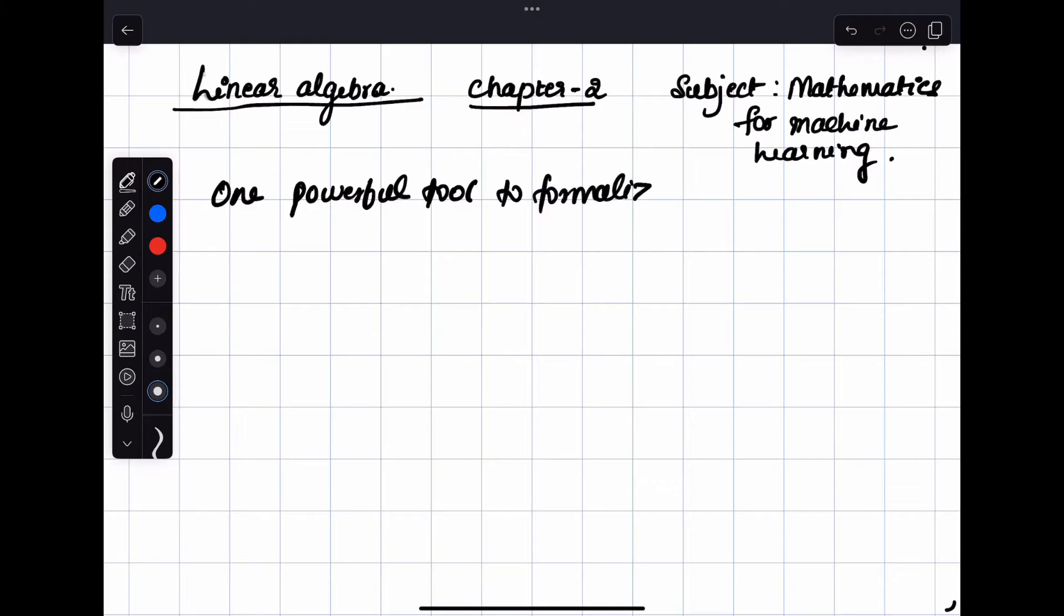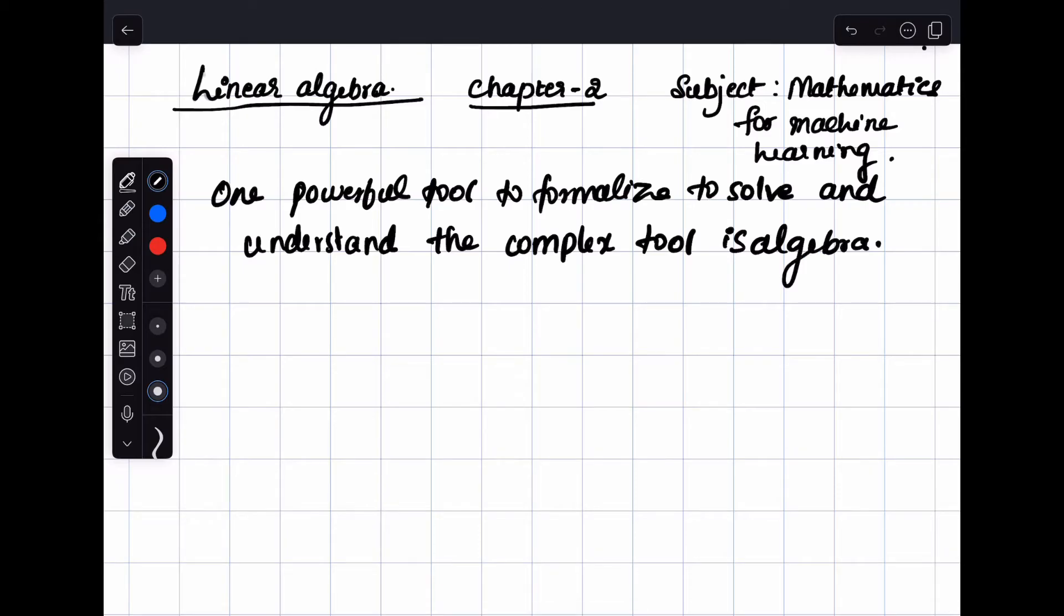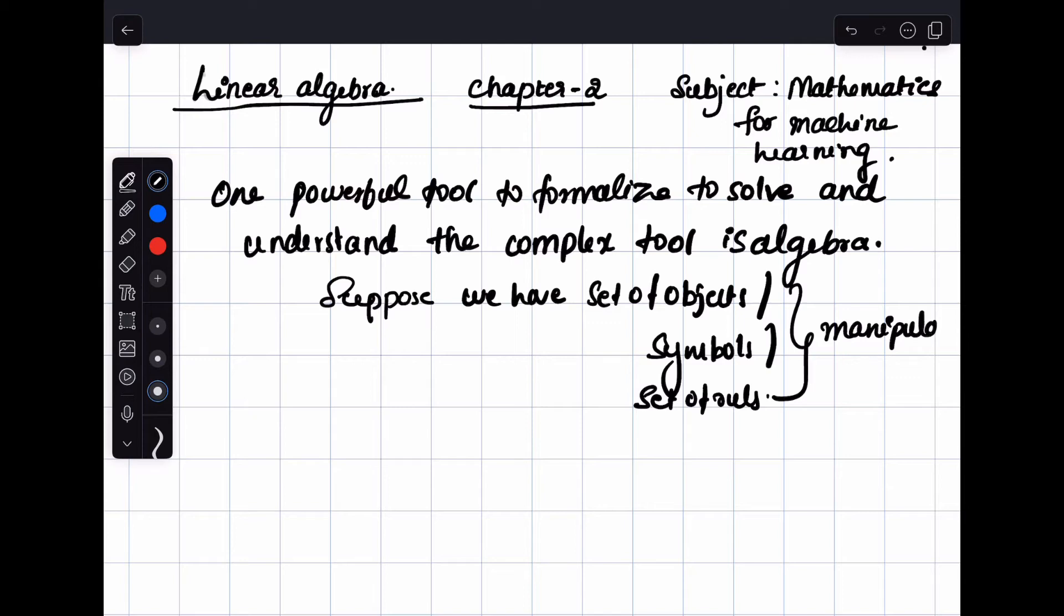One powerful tool to formalize, to solve, and to understand complex problems is called algebra. Now this seems to be very difficult, I understand. So let us break things down. Suppose we have a set of objects or symbols or set of rules. The manipulation of these symbols is called algebra.